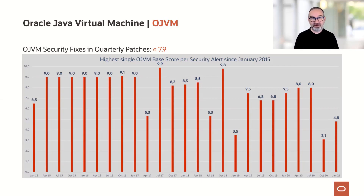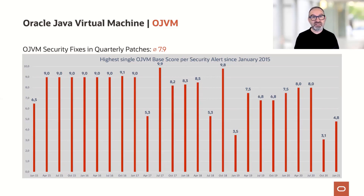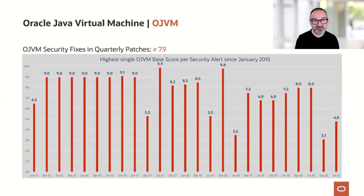This is not to say OJVM is bad. OJVM is extremely powerful. If you have stored Java code in the database and you use OJVM, some ACE directors have shown clearly how much faster your Java code runs when it's in OJVM. But because OJVM is so powerful inside the database, if there's a security vulnerability, that may be very, very critical, because OJVM itself is so powerful.